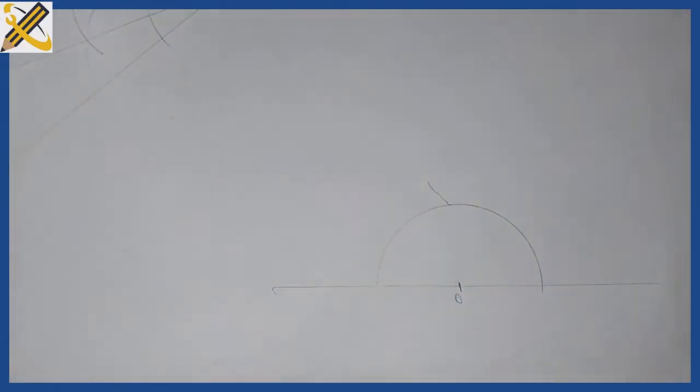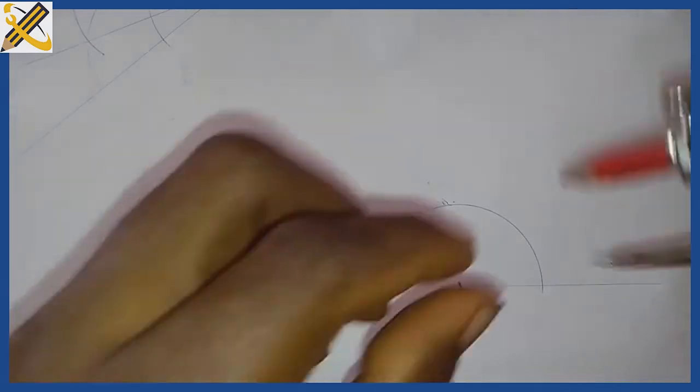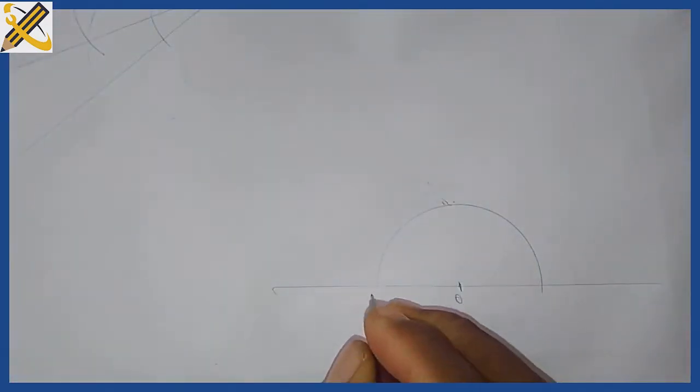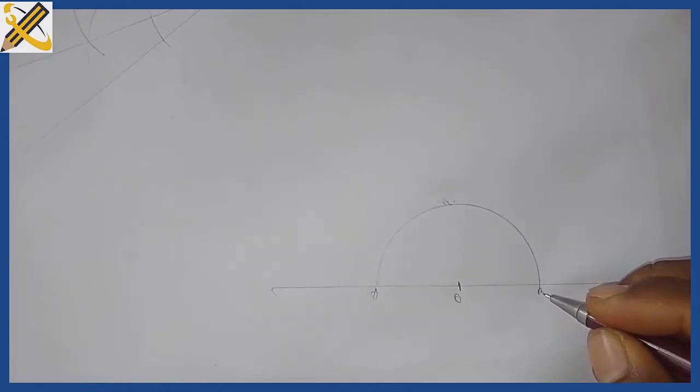After drawing the arc with the same radius, denote this point A and denote this point B.